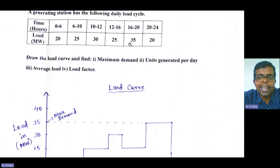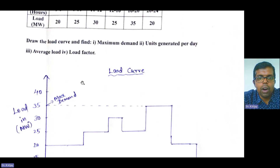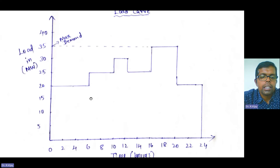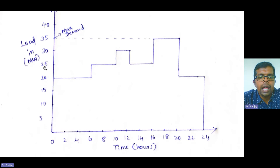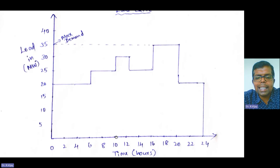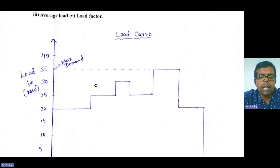Based on the data, you need to choose the y-axis scale. The loads given are 20, 25, 30, and 35 megawatt, so I am choosing a scale of 5, 10, 15, 20, 25, 30, 35, 40 megawatt. You need to clearly mark both axes. Next, from the data, plot the load curve.